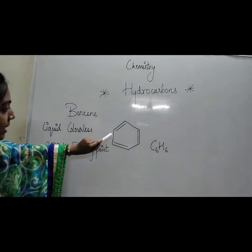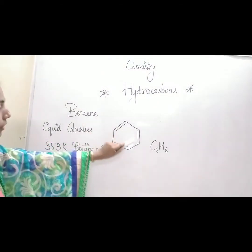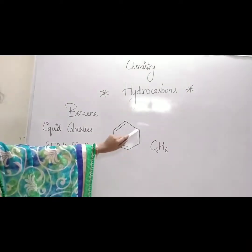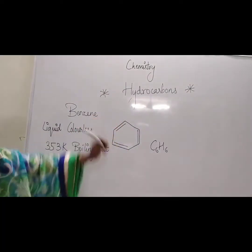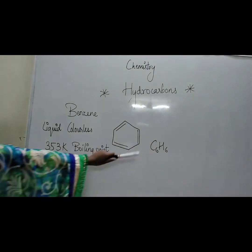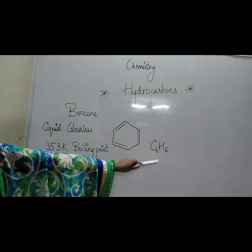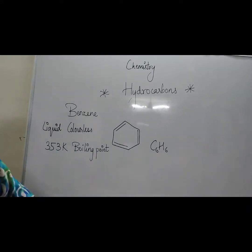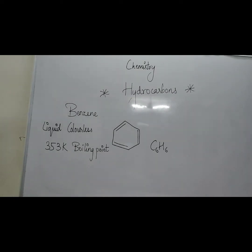There is a double bond here, then a single bond, then a double bond, then a single bond, then a double bond, then a single bond. So benzene's structure has continuously alternating double bond, single bond, double bond, single bond. The molecular formula C6H6 means the number of hydrogens and carbons is the same. This benzene was synthesized by the scientist Berthelot in 1870.